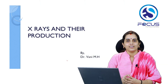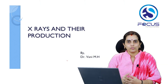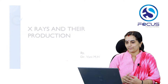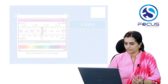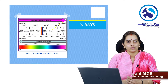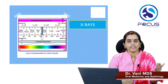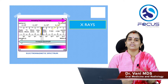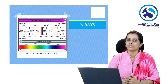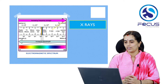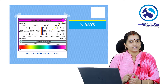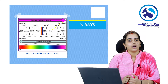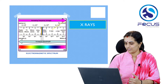Hello everyone, today we will be discussing X-rays and their production. The picture shows the electromagnetic spectrum where different electromagnetic radiations are arranged in increasing order of energy. X-rays are mainly high-energy electromagnetic radiations.